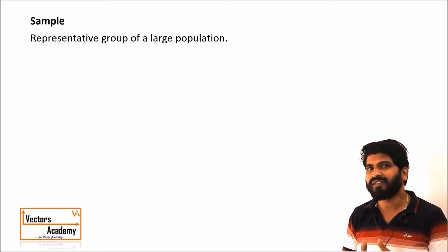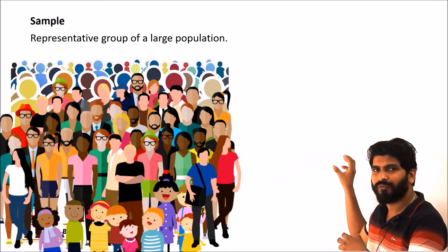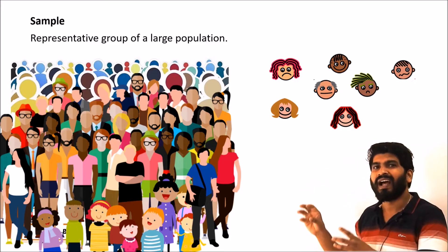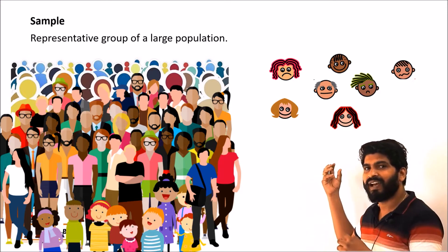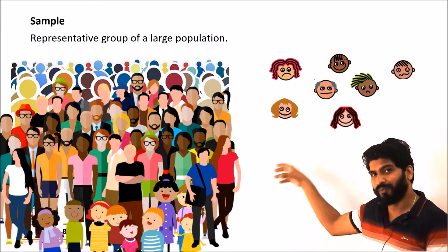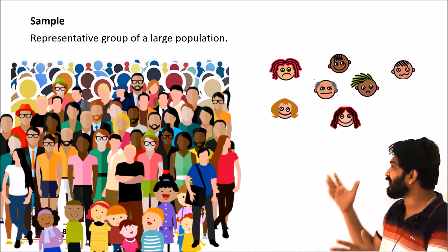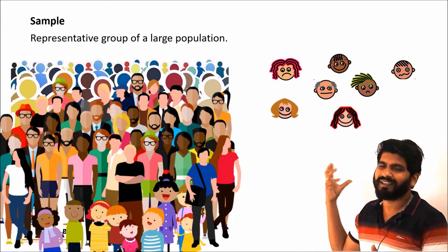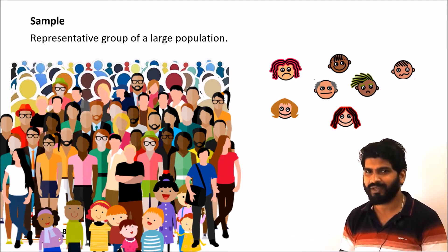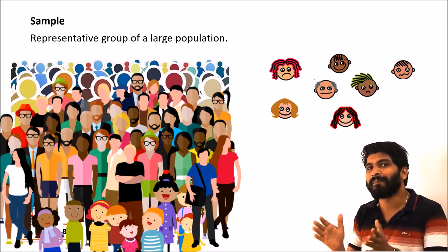If we need a quick result, we need to find another way. So we select a sample from the population, take the average height of those people, and assume that the average height of the sample equals the average height of the population, since the sample comes from the population itself. This method has certain drawbacks because the sample selected might not give the exact average as the population — there might be a difference in the means.